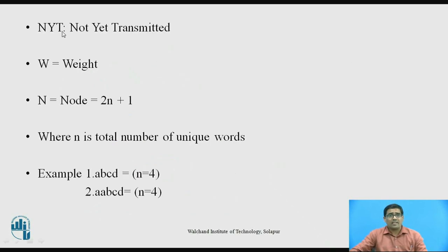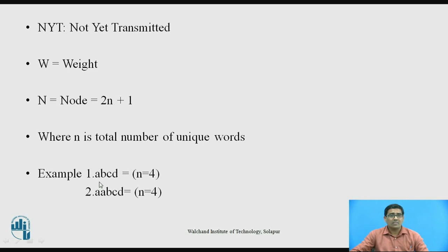NYT means 'not yet transmitted'. W means weight and N is a node. Node is equal to 2N plus 1, where N is the total number of unique symbols. For example, if we want to transmit A, B, C, D — the total N is 4.